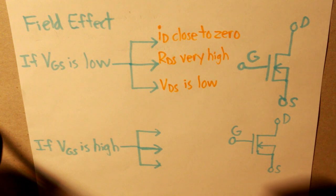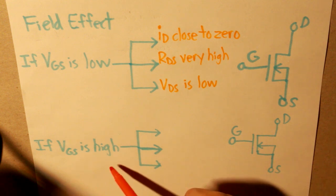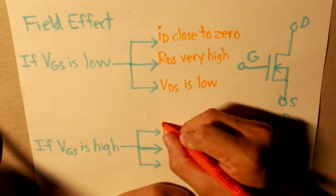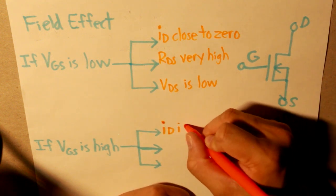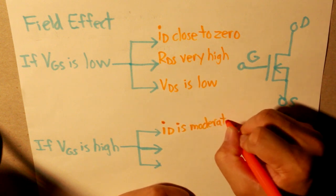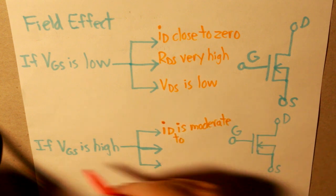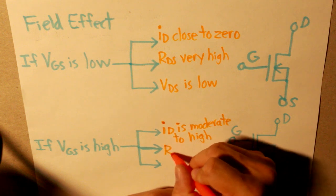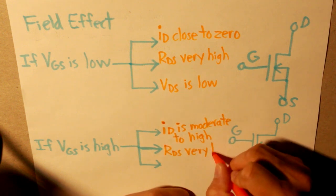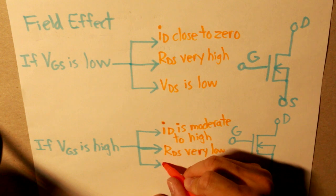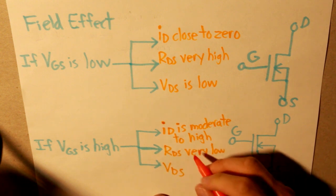Now, let's apply our situation when, if VGS is high. If VGS is high, then ID is moderate to high, depending on the magnitude of VGS. RDS will be very low. So low that it will have an exponential effect. VDS will be high.